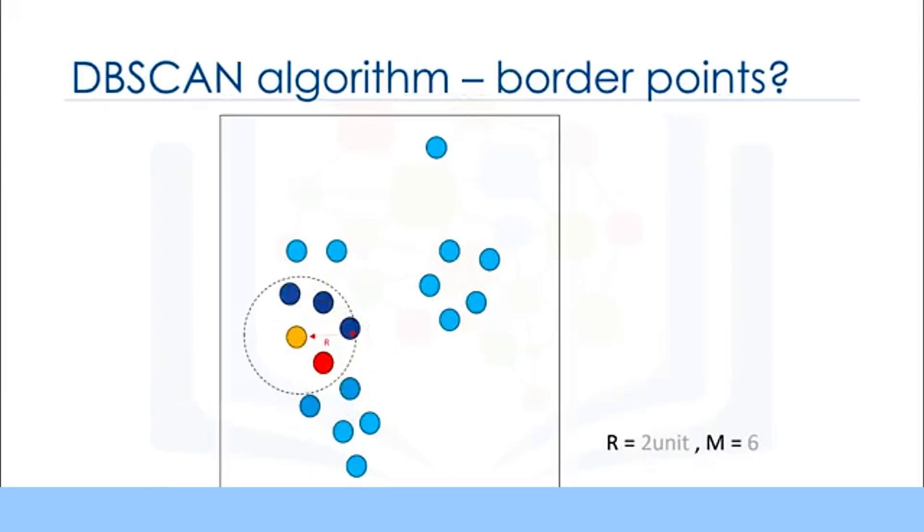Okay, what happens if it's not a core point? Let's look at another point. Is this point a core point? No. As you can see, there are only five points in this neighborhood, including the yellow point. So what kind of point is this one? In fact, it is a border point.